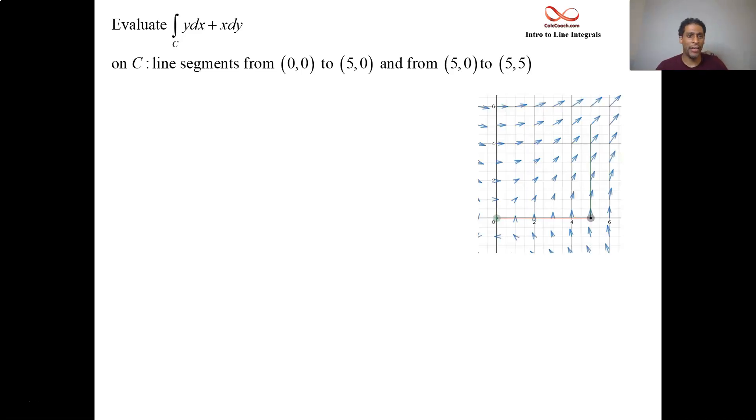First up, our curve is going to be going from the origin to 5 on the x-axis, and then going from that point up to 5,5, vertically upward. The vector field is y for the i component and x for the j component. Here's a video of the traversing of the path in two different parts: a horizontal part and a vertical part. So the function is yx, the vector field.